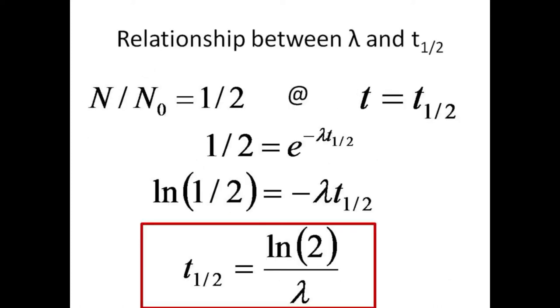One can make the connection between half-life and decay constant by setting the ratio of N over N0 equal to one-half when the time t is the half-life. Then one-half equals E raised to the minus lambda t one-half. Taking the log of both sides gives log of one-half equals minus lambda t one-half. The negative of the log of one-half is just the log of 2. So the half-life equals log 2 divided by lambda. Thus, measuring lambda yields the half-life.